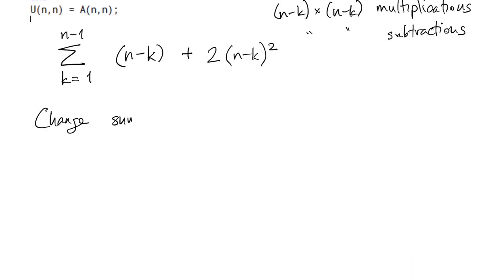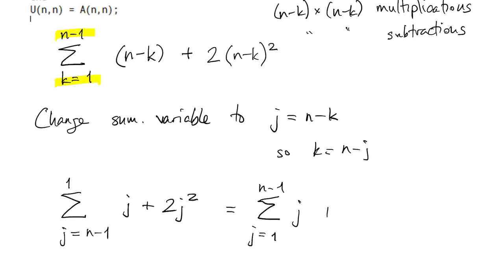It's a lot like changing an integration variable. So if j is defined to be n minus k, then that means k is equal to n minus j. And when k is equal to 1, then j is equal to n minus 1 at the bottom. And when k is equal to n minus 1, j is equal to n minus that, which is just 1. And so now the sum simplifies to j plus 2j squared. Sums don't care which order you go, unlike integrals. So we can just convert these into sums from 1 to n minus 1. And now we have two sums that I can apply our summation identities to.